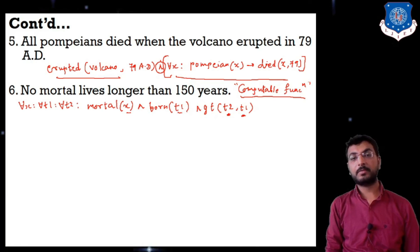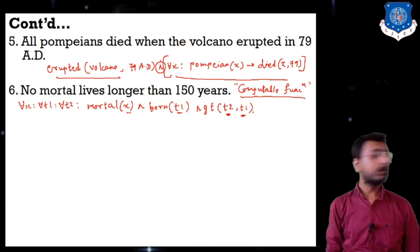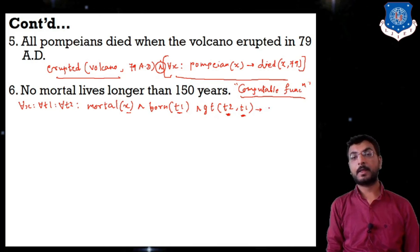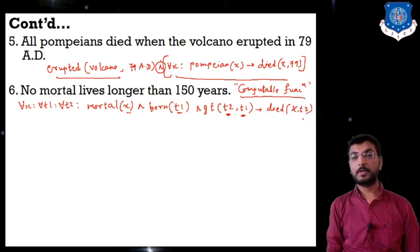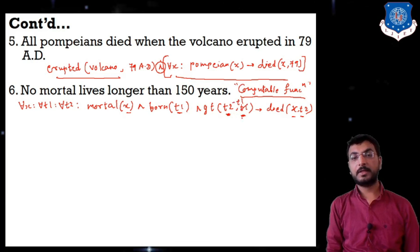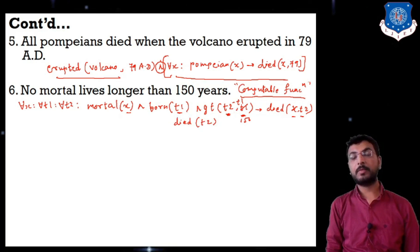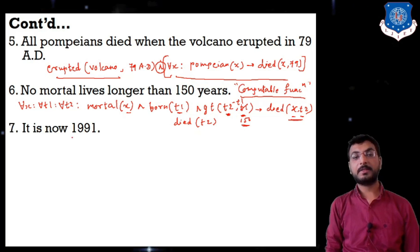...then if x died at time t2, and t2 minus t1 is greater than 150, then x is definitely dead at time t2. So the computable function gt(t2, t1) and the expression t2 - t1 > 150 represent that no mortal lives longer than 150 years.